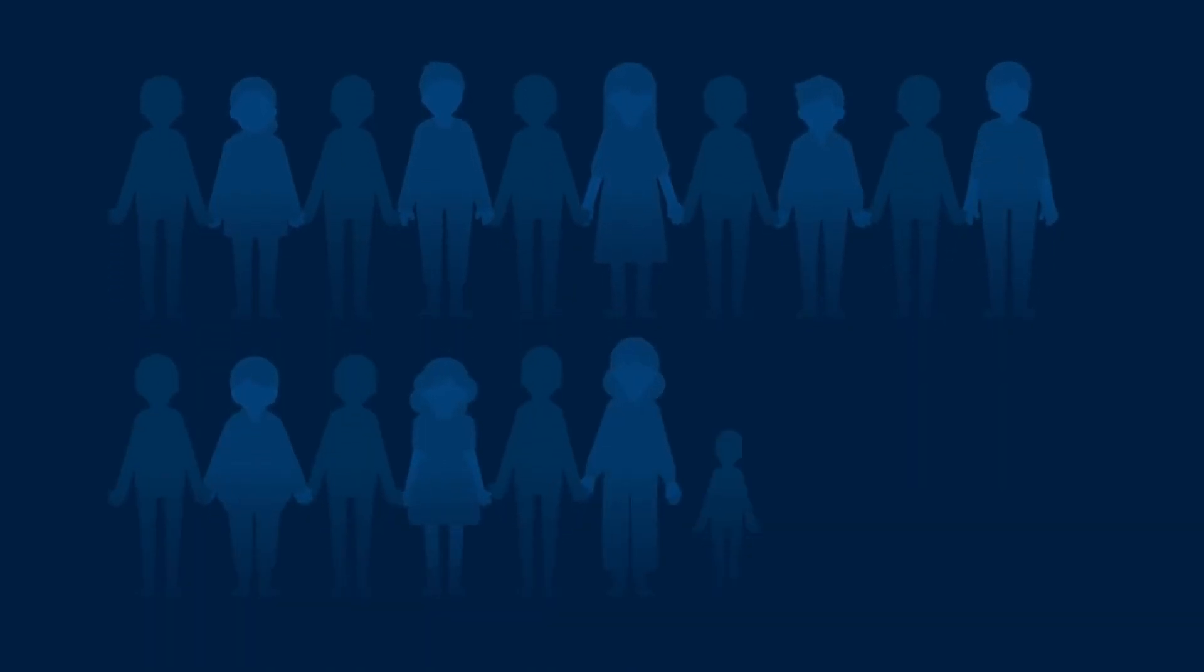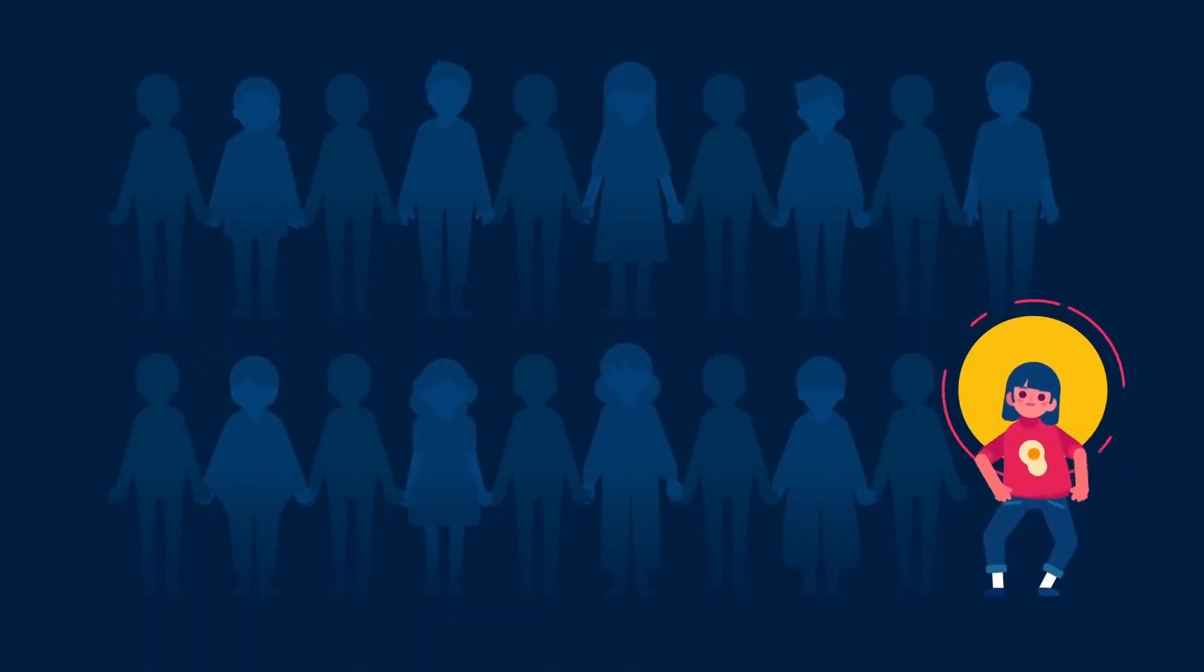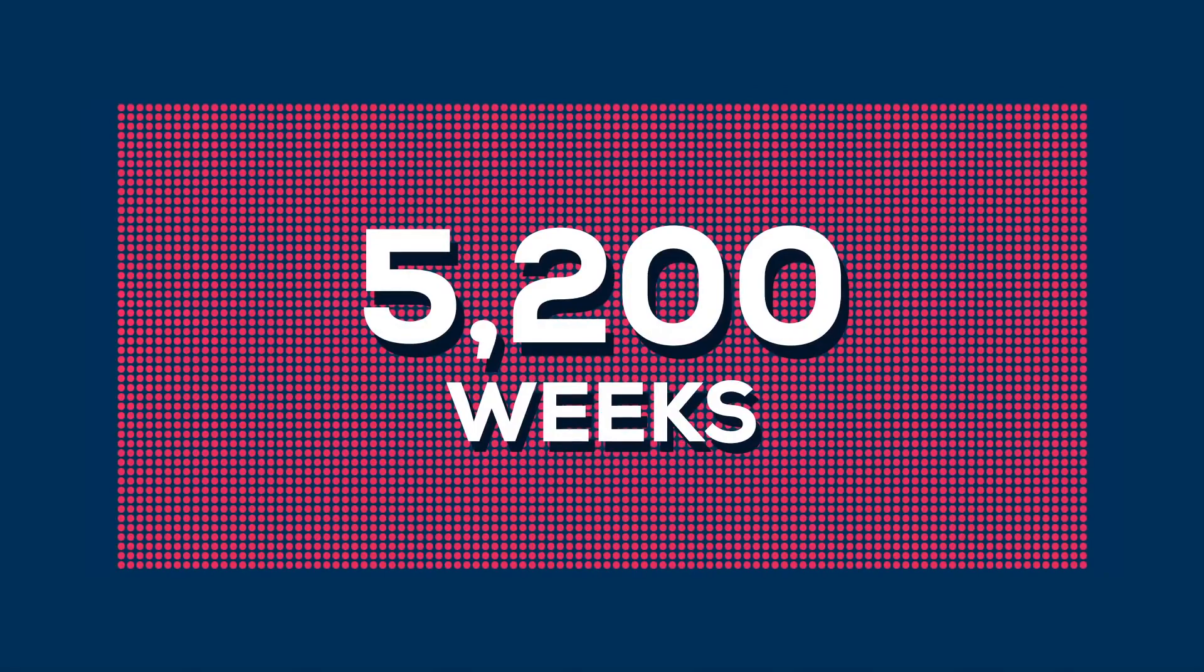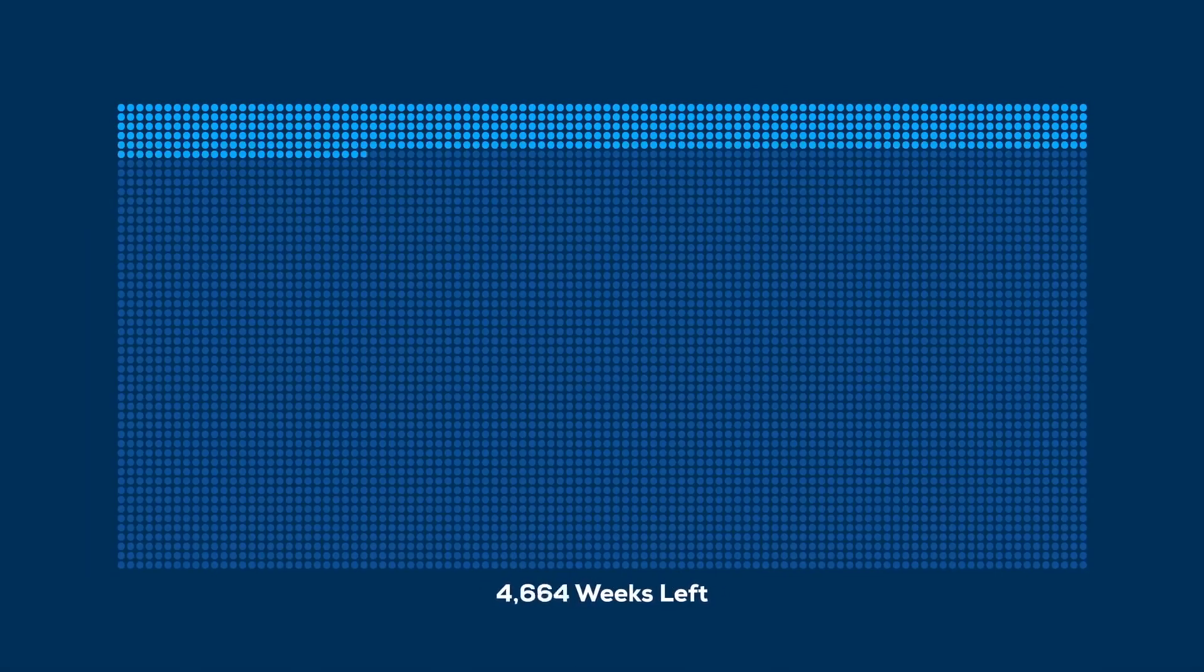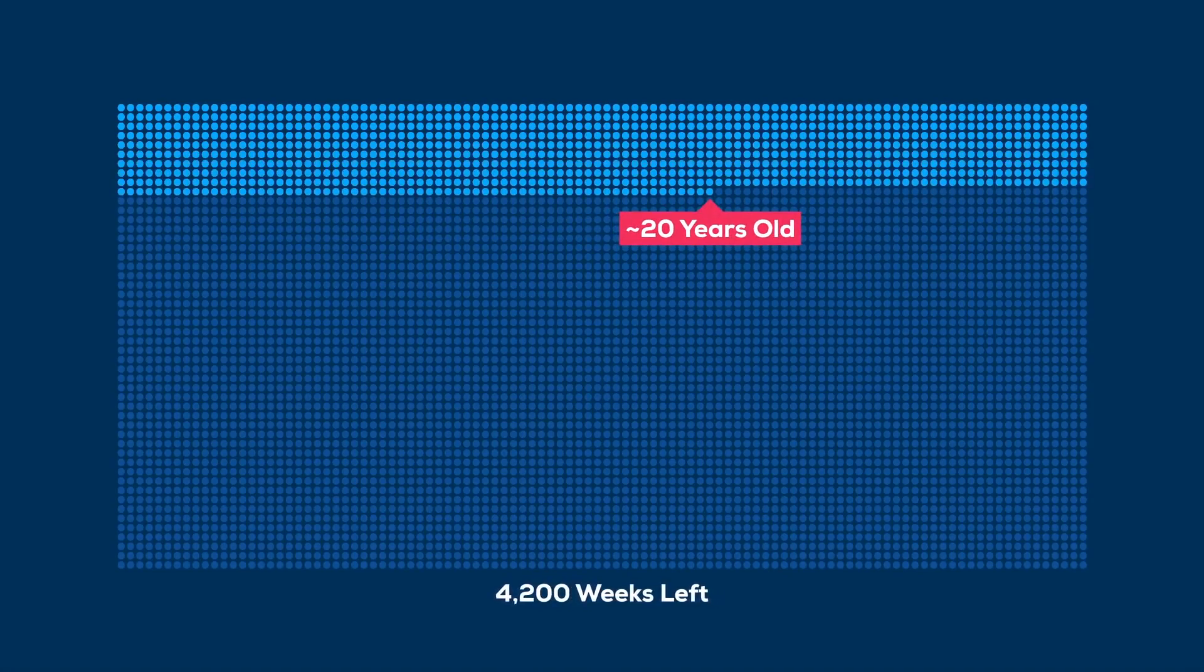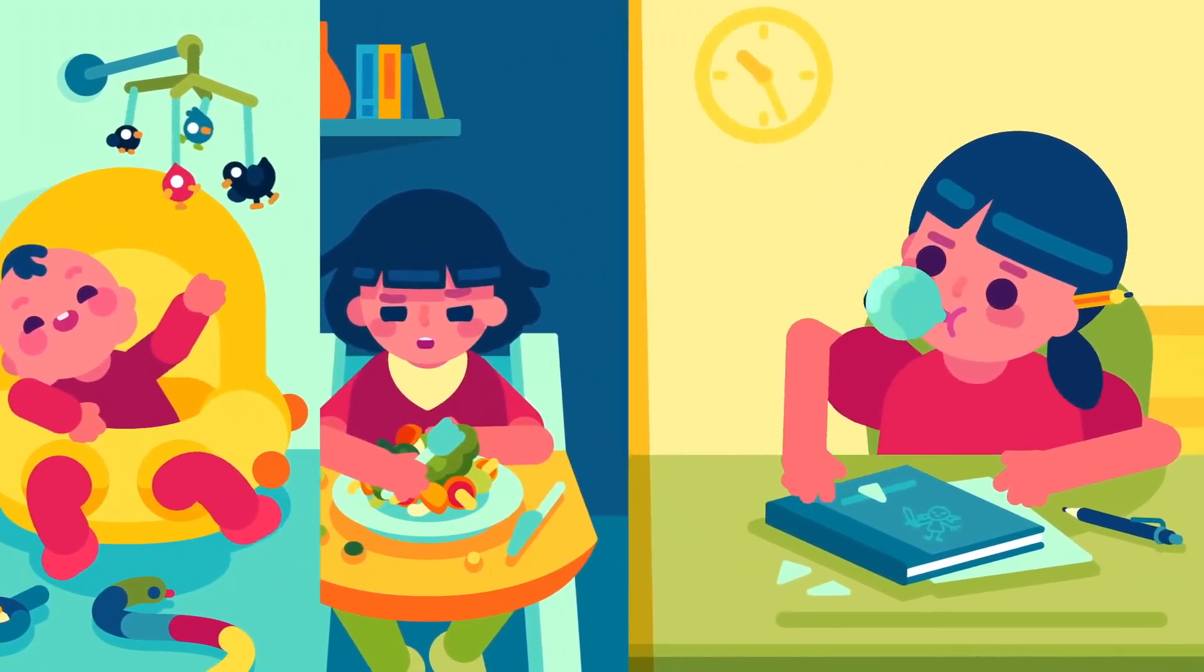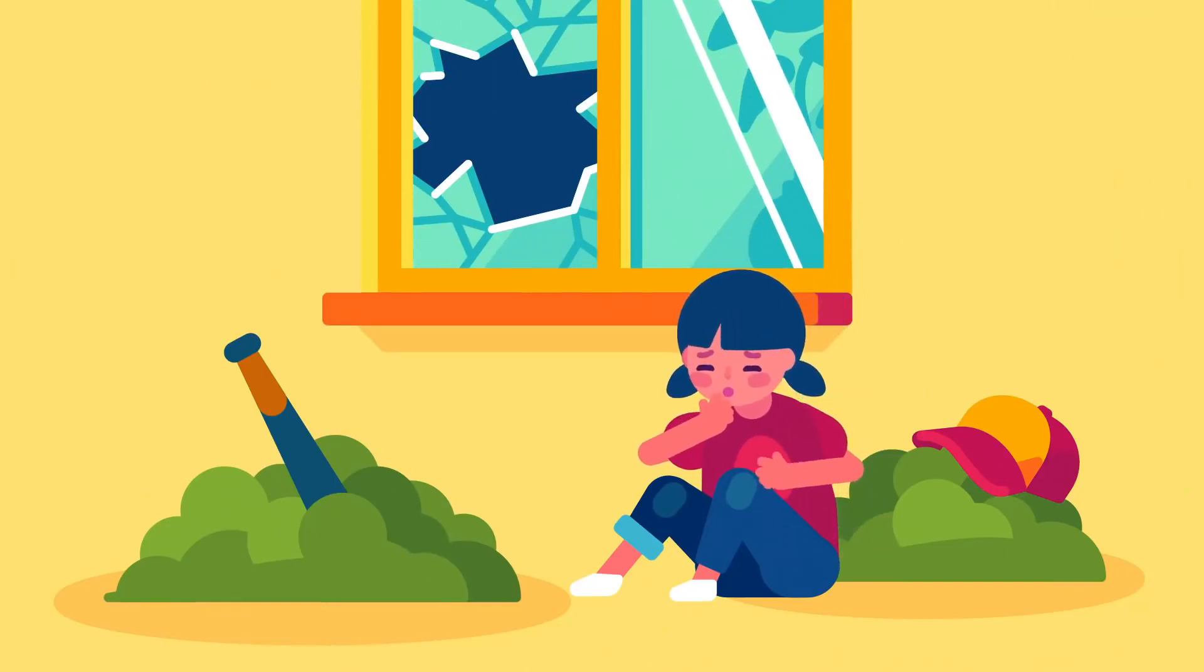About 1 in 20 people watching this video will get to live to 100. Let's assume you are one of the lucky ones, which means you had a total of 5,200 weeks of life at your disposal when you were born. You spent the first 600 weeks being a kid and 400 being a teenager. As a payoff, you were somewhat spared from the consequences and responsibilities of adulthood.